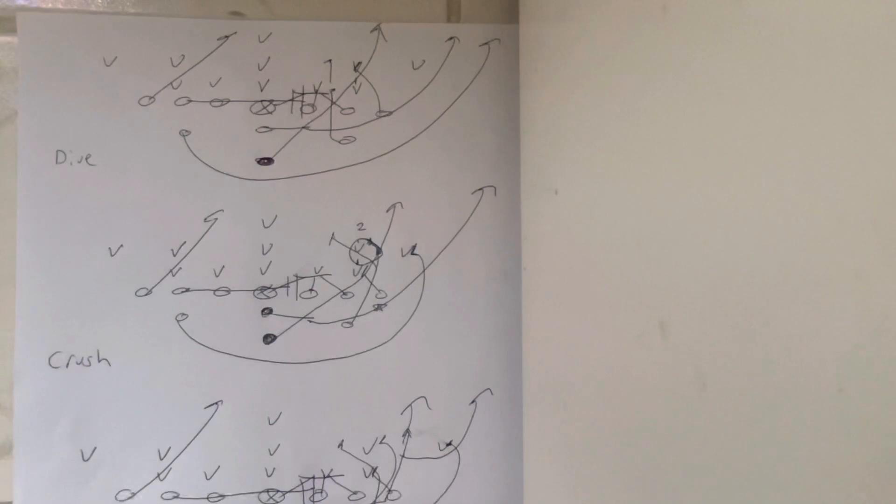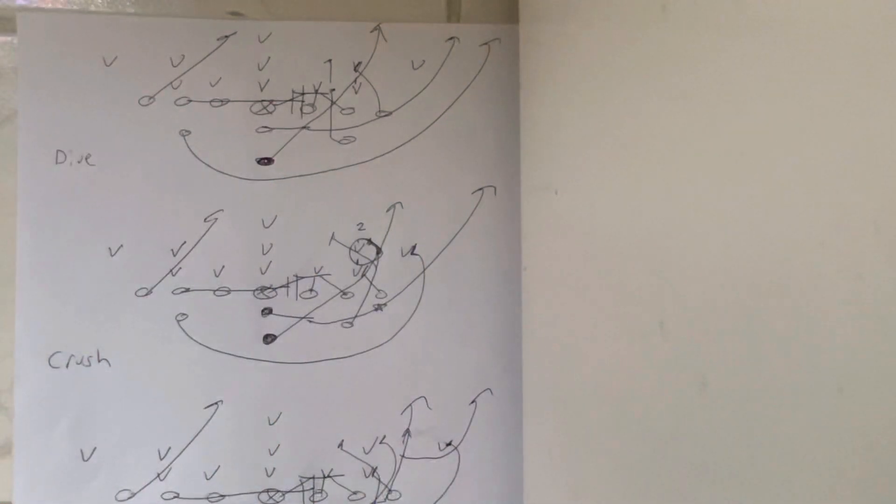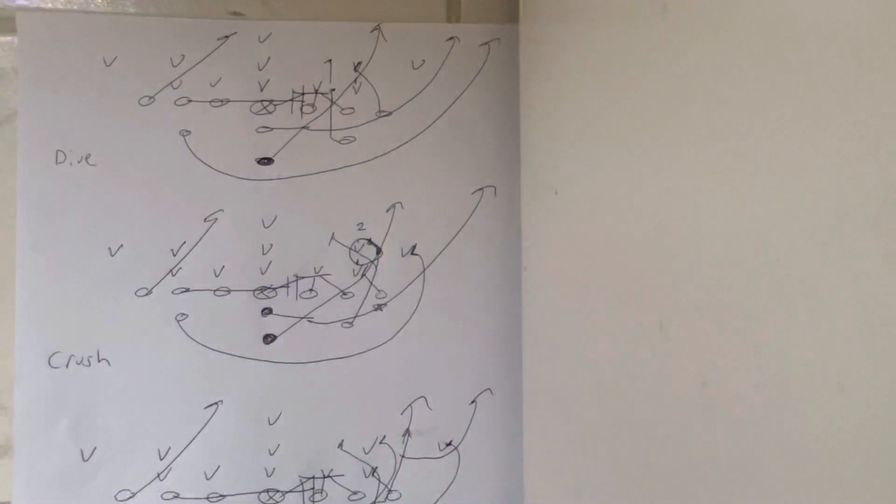Basically you're establishing the fact that you're going to move the defensive tackle. You're going to get four yards, and if you do, you don't have to call another play. Just line up and run it again. But let's say you don't get four yards on it. Let's say number one took the quarterback.